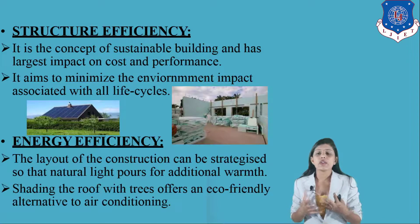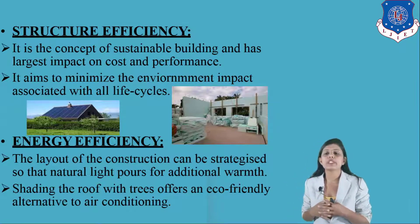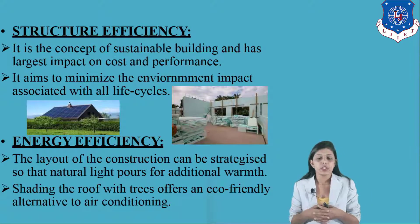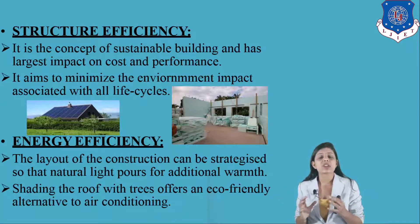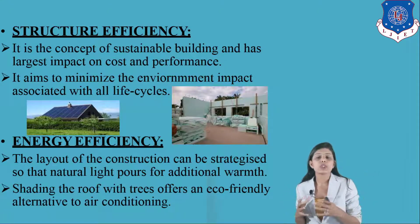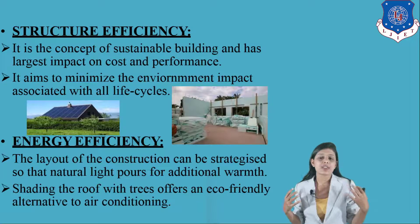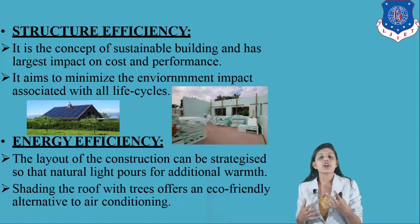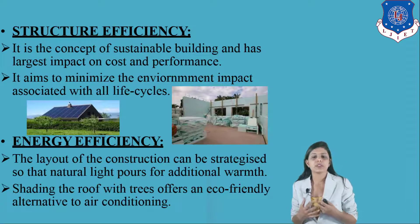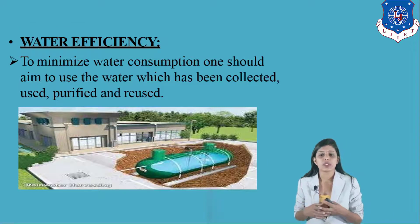For energy efficiency, the layout of construction can be strategized so that more natural light enters the building. Shading the roof with trees offers an eco-friendly alternative to air conditioning. If a structure is designed so that more sunlight pours into the room, you don't need to turn on tube lights during the day. Similarly, if windows are designed to provide proper ventilation, the use of air conditioners can be reduced. These are smart solutions for developing a green building.